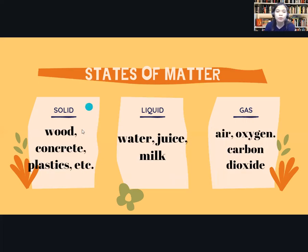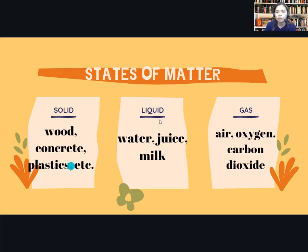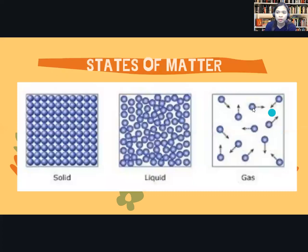For solids, examples are wood, concrete, plastics, and so on — everything with a definite volume and shape is solid. For liquids — things that copy the shape of their container — like water, juice, and milk. For gas, examples are air, oxygen, and carbon dioxide. Now let's compare the arrangement of molecules.